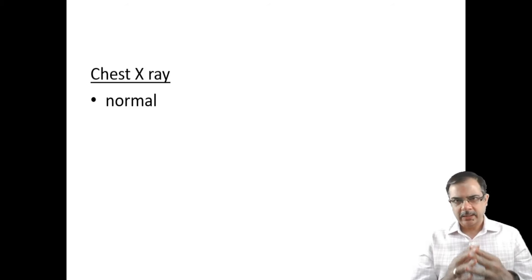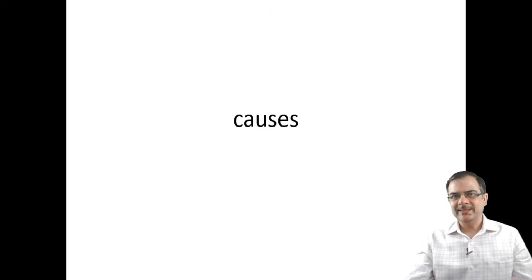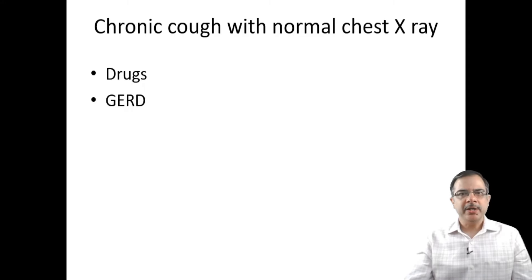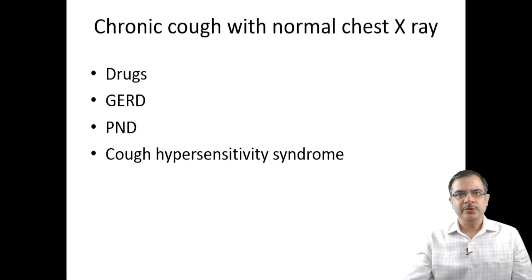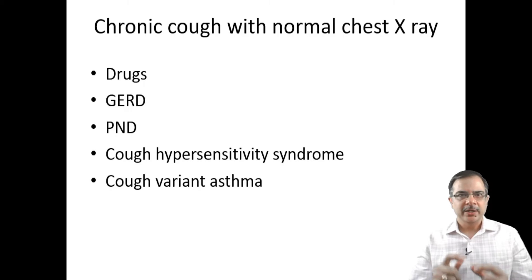So with chronic cough, normal clinical history, normal physical examination, and a normal chest X-ray, 90% of cases will be due to these five etiologies: drug-induced cough like ACE inhibitors, GERD, post-nasal drainage, cough hypersensitivity syndrome, and cough variant asthma.